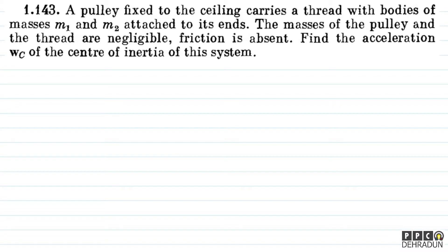The question says: a pulley fixed to the ceiling carries a thread with bodies of masses M1 and M2 attached to its ends. The masses of the pulley and the thread are negligible. Friction is absent. Find the acceleration Wc of the center of inertia of this system.